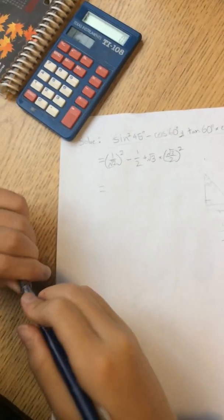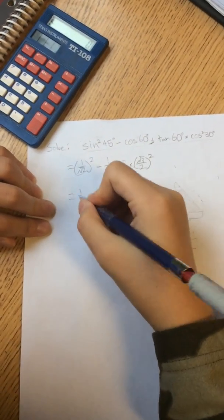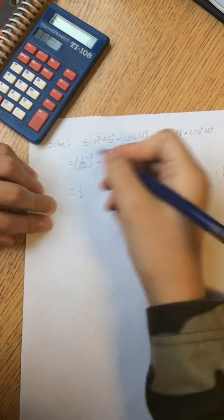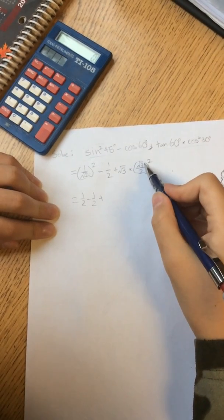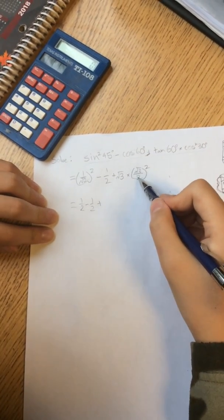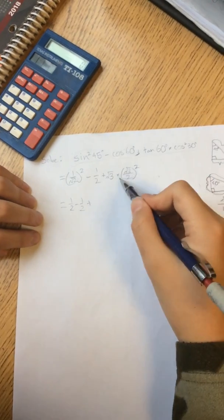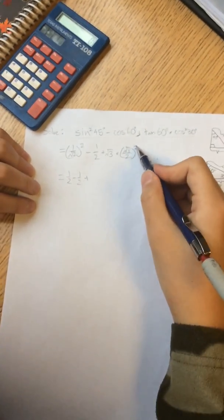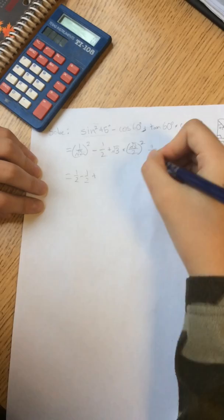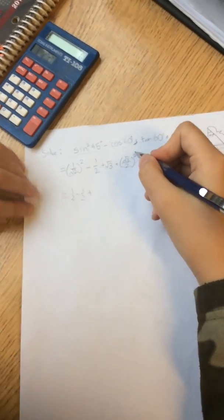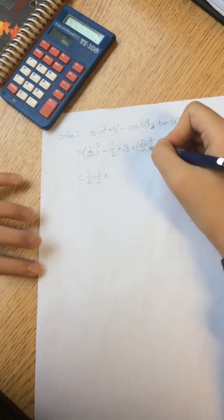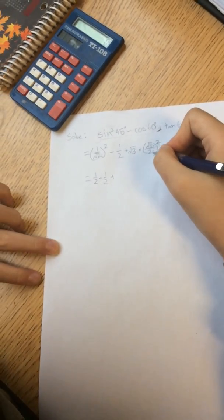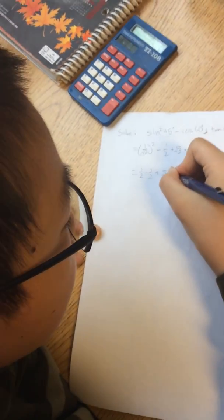1 over the square root of 2 squared is 1 over 2. Because the square root of 2 times square root of 2 is 2. And 1 times 1 equals 1. Minus square root of 2 plus square root of 3 times the square root of 2. No, the over 2 to the power of 2. Anyways, this would be 9 over 4. Because the square root of 3 is square root of 3 times square root of 3. And the square root of 2 is 2 times 2. So it's square root of 3 times 9 over 4.